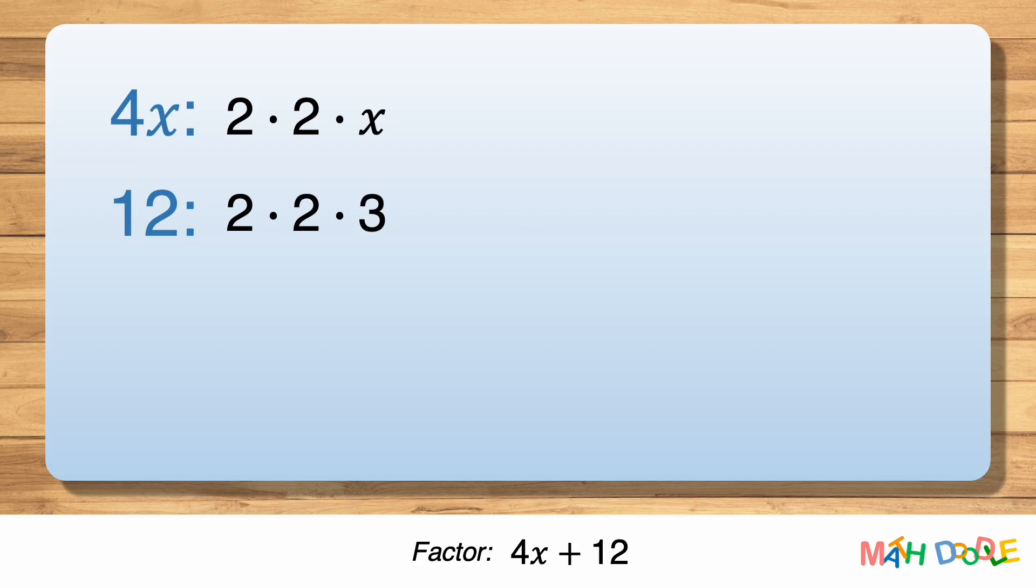Then let's compare these expressions and find the common factors. They both have two twos, and 2 times 2 is 4, so the greatest common factor of 4x and 12 is 4.